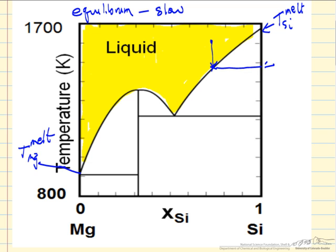The first thing that forms is pure silicon. At this temperature we're going to have liquid with this composition, about 70 some percent silicon, and we're going to have pure silicon in equilibrium.